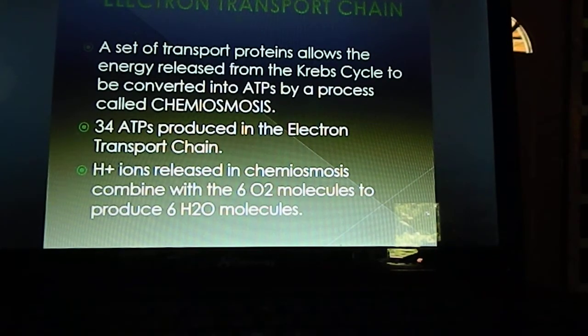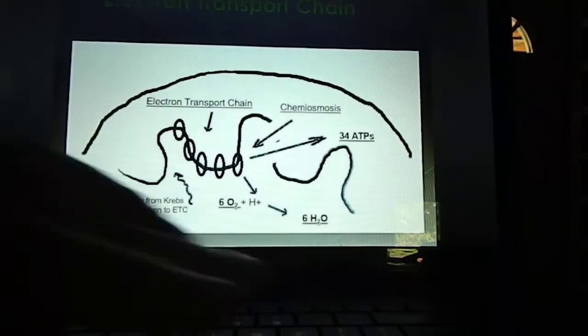When all is said and done, 34 ATPs are produced during the electron transport chain. Hydrogen ions are released in chemiosmosis, and when that happens, you have oxygen there, and that oxygen accepts those hydrogen ions. When that happens, they form waters, and so there's our other product of cellular respiration.